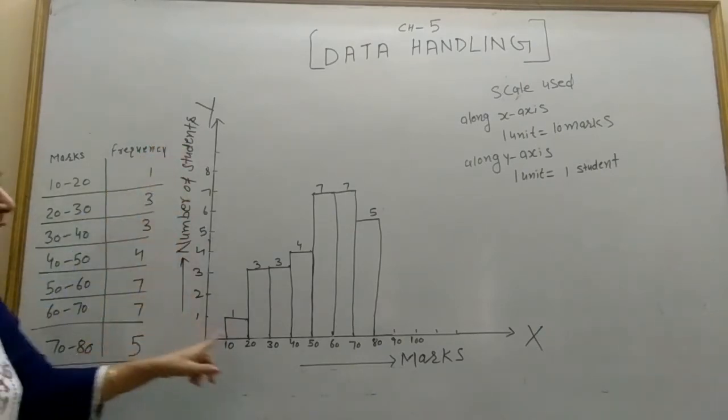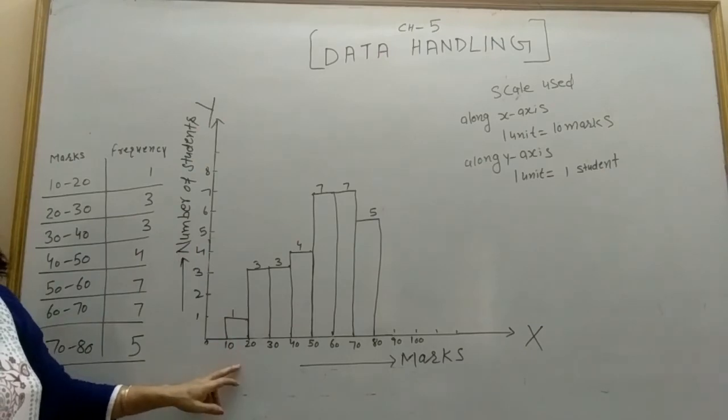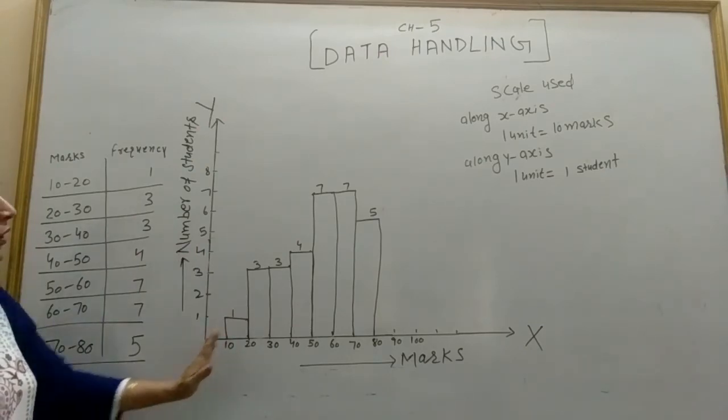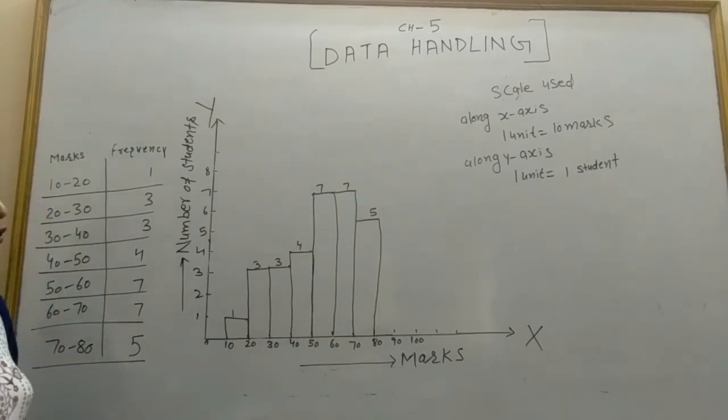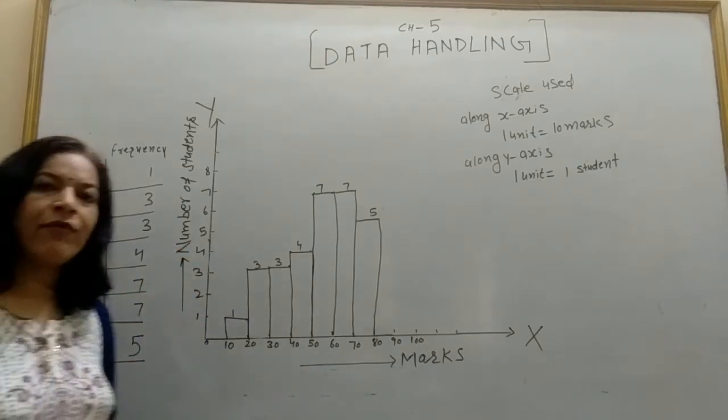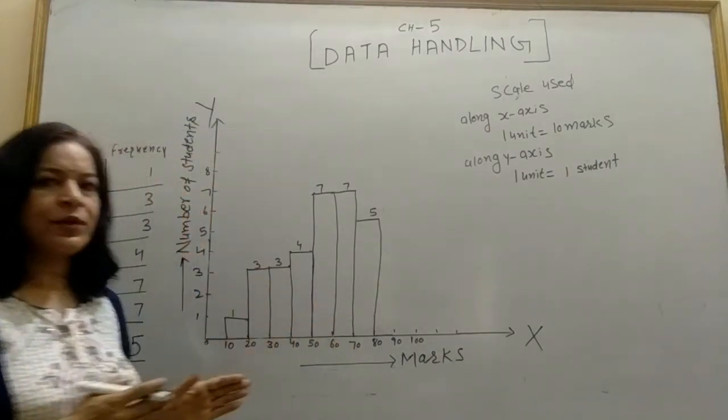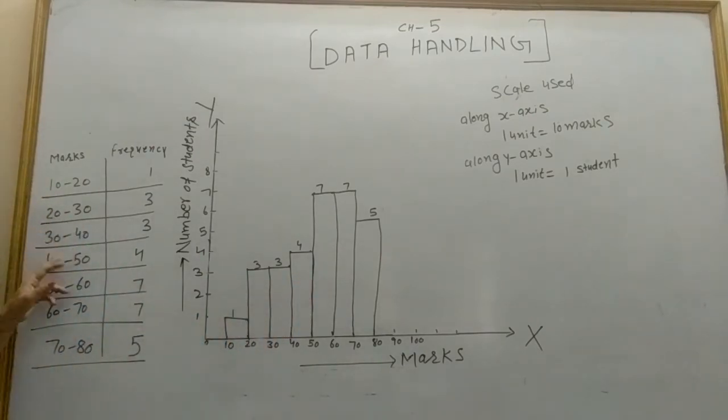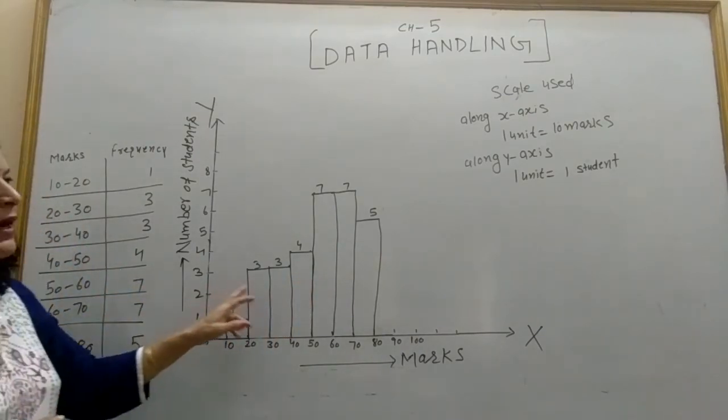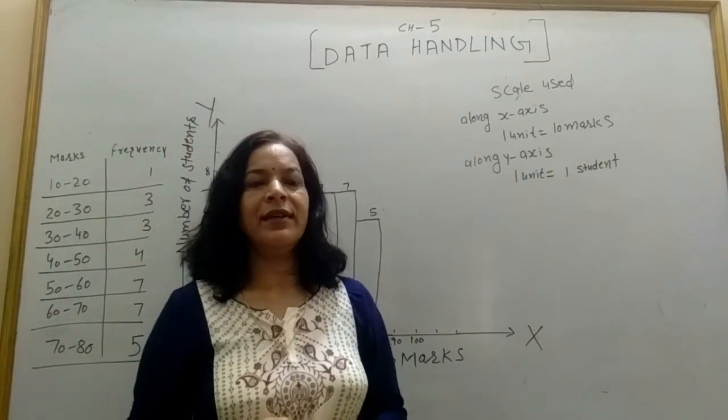This type of graph, where numbers are on both axes and no gap between the bars, is called a histogram. So when we have raw data, first we organize that data, divide into groups, continuous class groups. And for that continuous data, we represent it by the histogram. Clear? Thank you.